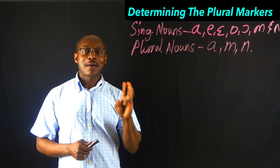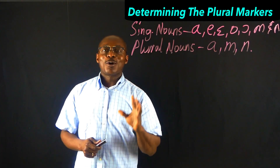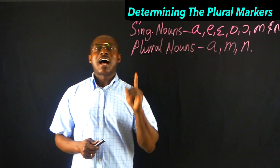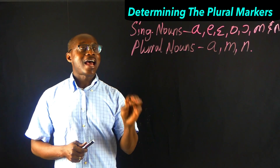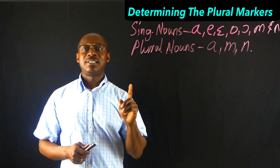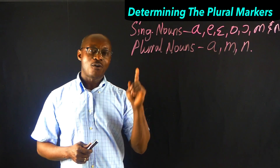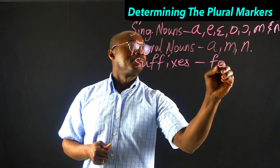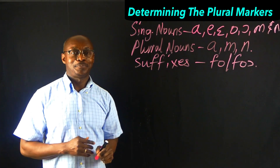Point number three: we also know that some of the nouns have suffixes, and they can have these suffixes — fo or fo.